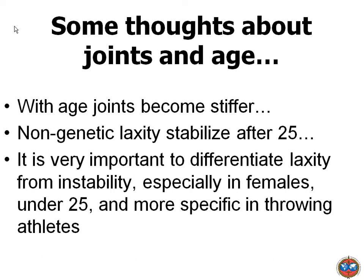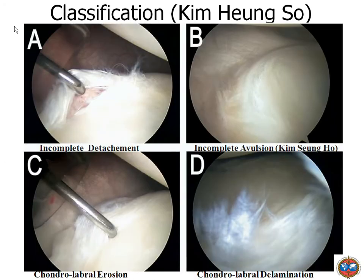In my practice I see many patients involved in sports, and I know that non-genetic laxity stabilizes after age 25. So when I have a sports person — usually a female around 22 — frustrated that the shoulder pops and clicks, I put them on a rehab program and they usually become better and don't need surgery.